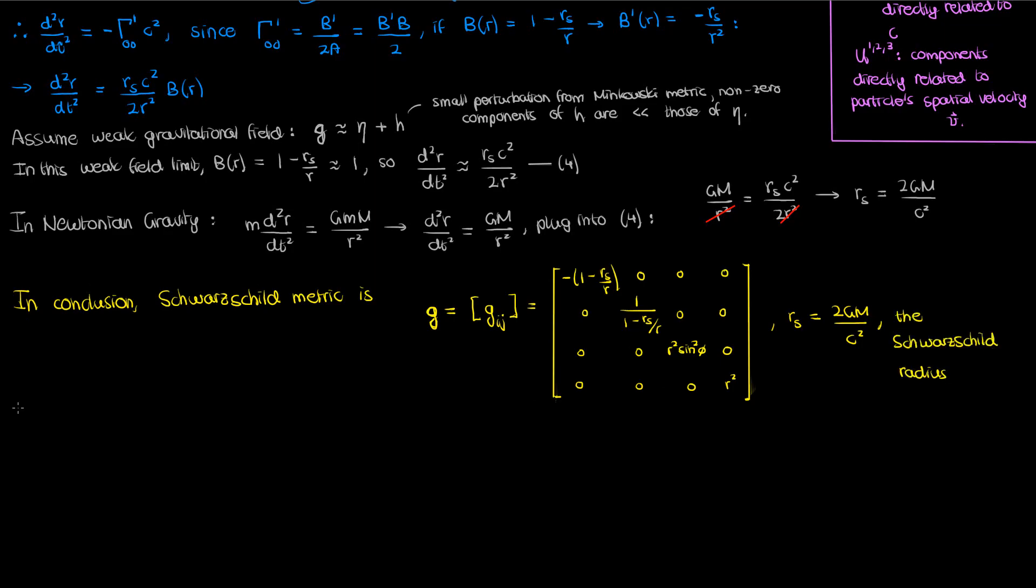Sometimes you'll see the metric written in the form of the line element ds squared, or the spacetime interval ds squared, which you use to calculate distances in spacetime. The Schwarzschild metric would then be incorporated into this line element as follows. Now this ds squared equation is sometimes also called the Schwarzschild metric, but in reality the metric refers to the metric tensor given by G. The ds squared is the line element.